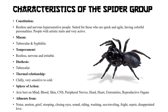Thermal relationship: this patient is chilly — very sensitive to cold. Sphere of action: spider group की ज़्यादातर remedies का effect होता है mind पर, blood पर, skin पर, CNS पर, peripheral nerves पर, head, heart, extremities, और reproductive organs पर — मतलब पूरी body पर इन remedies का effect होता है।